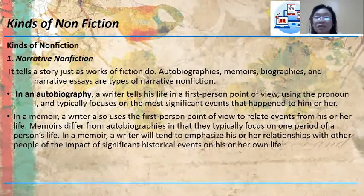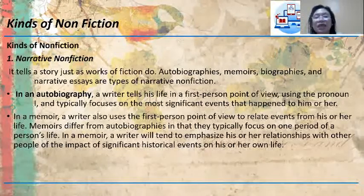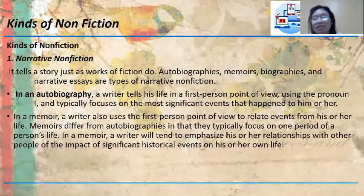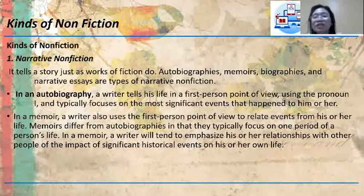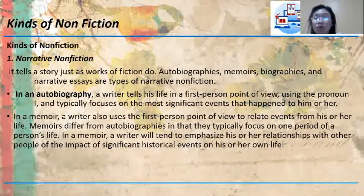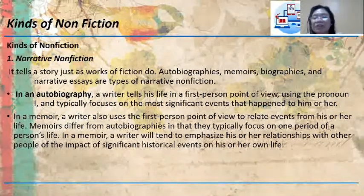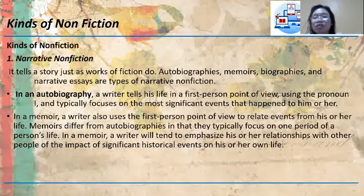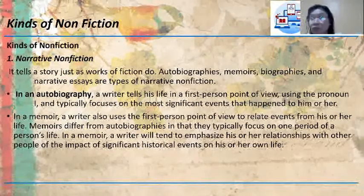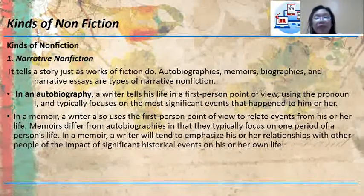Now let's move on to the different kinds of non-fiction. First, we have narrative non-fiction. When we say narrative, it tells or narrates a story, just as works of fiction do. Autobiographies, memoirs, biographies, and narrative essays are types of narrative non-fiction. In an autobiography, a writer tells his or her life in a first-person point of view using the pronoun 'I', and it typically focuses on the most significant events that happened to him or her. In a memoir, on the other hand,